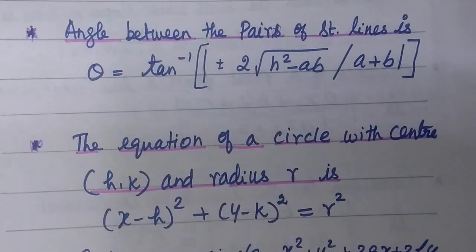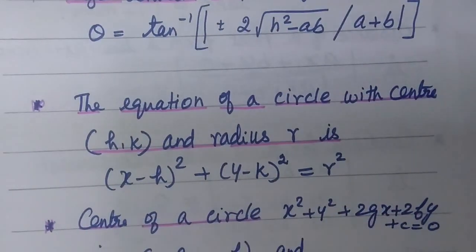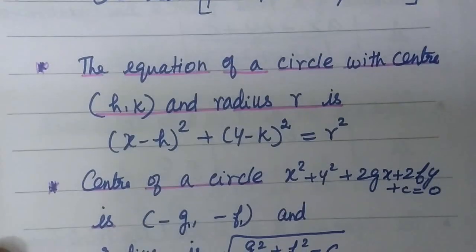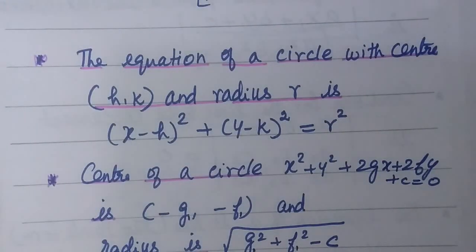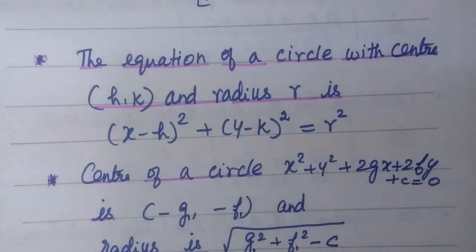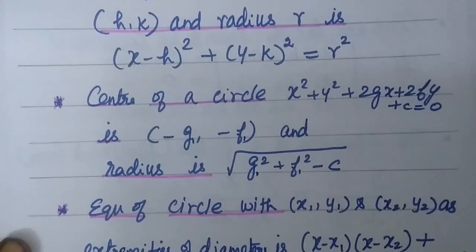Where r is the radius and (h, k) is the center of the circle. Then the equation of a circle with center at (minus g, minus f) and radius equal to root of (g squared plus f squared minus c).